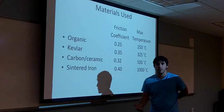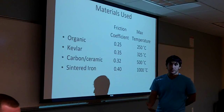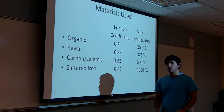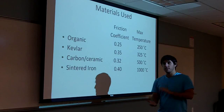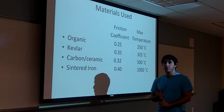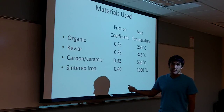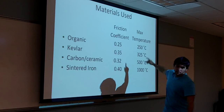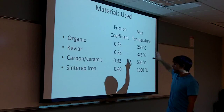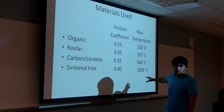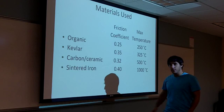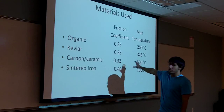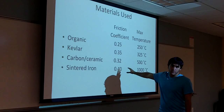Coefficient of friction is a major part in material selection because different coefficients of friction produce different outputs. The four things to consider are actuation force, heat dissipation — where looking at max temperatures helps with material selection — torque transmitted, and energy loss. The last two are both directly correlated to the coefficient of friction.